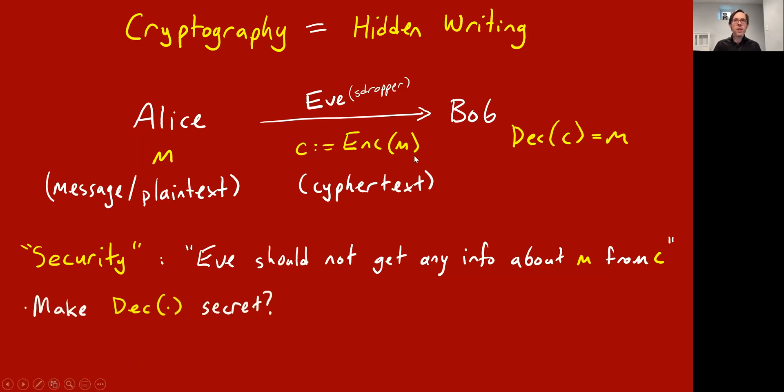One thing one has to do in the study of cryptography is understand what is meant by security. At a high level, you want somehow that Eve should not get any information about what the message is M just by her ability to eavesdrop and learn the encrypted message C. And it's unclear how exactly you might do this or arrange for this. So one possibility is maybe you could make this decryption algorithm a secret that only Bob knows. But this runs into the kinds of problems one always has in cryptography and secrecy. The secrets can fall into the wrong hands, and Eve might learn that decryption algorithm.